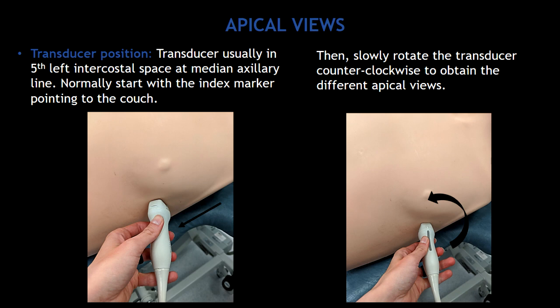Normally, start with the index marker pointing to the couch. Then, from this position we have to slowly rotate the transducer counterclockwise to obtain the different apical views.